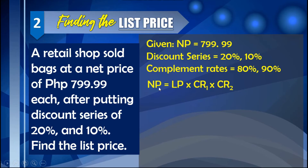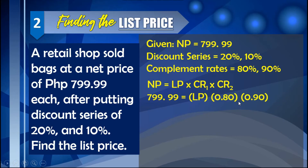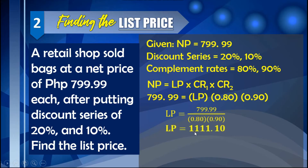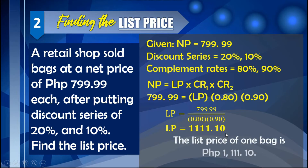Using the same formula, NP = LP × CR₁ × CR₂, we have 799.99 = LP × 0.80 × 0.90. Dividing both sides by 0.80 × 0.90, we get the list price as 1,111.10. This means the list price of one bag is 1,111.10.